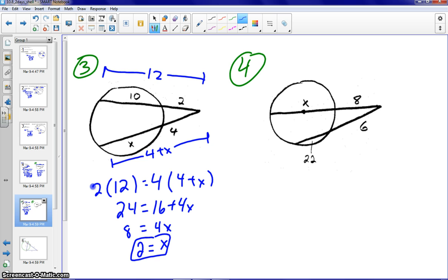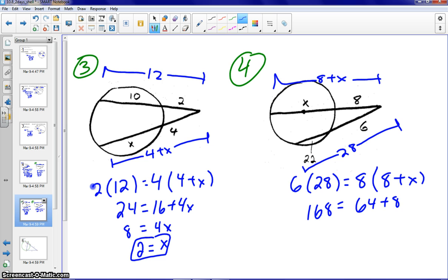The fourth example is also an example of a secant-secant. Good idea to pause it, try it on your own, and then check your answer. So we'll have 6 times the whole secant, so outer times whole, which is 28, equals outer times whole, so 8 times the binomial, 8 plus X. And if we go ahead and solve this as well, we'll get 8X equals the 104. And X equals 13.